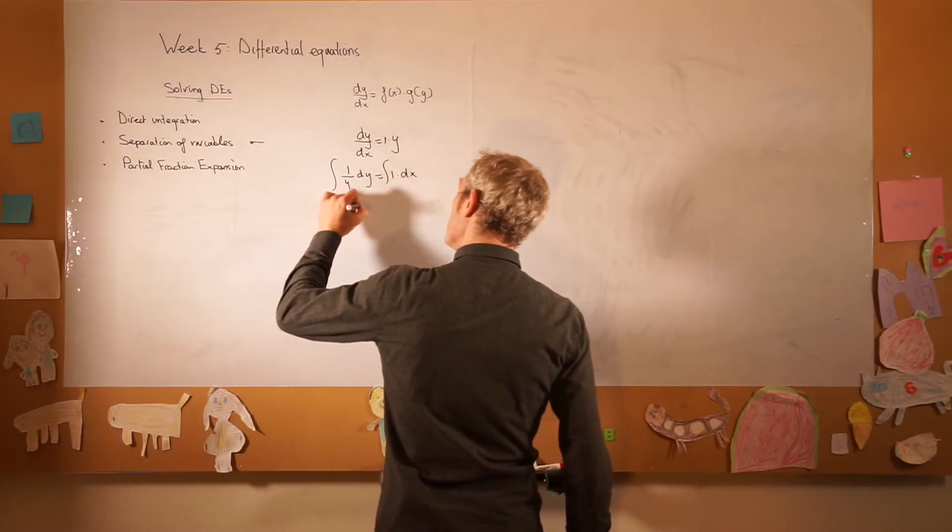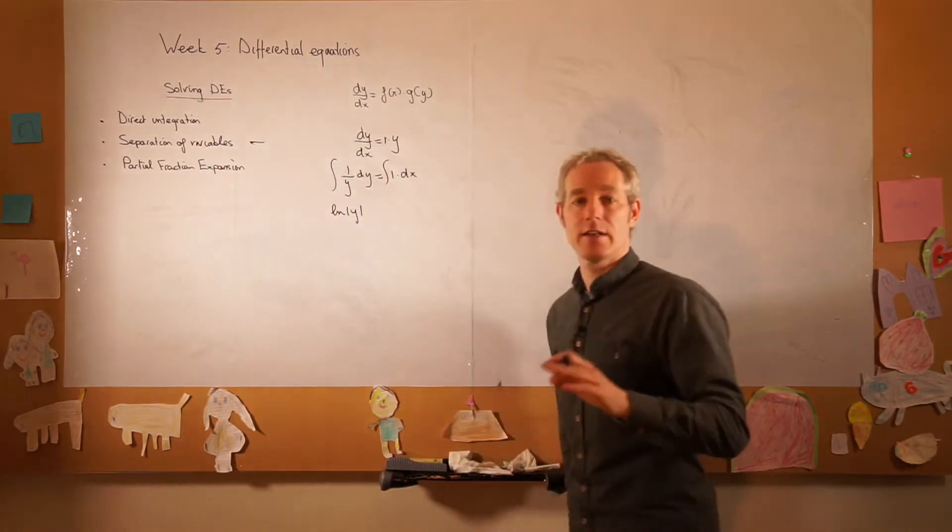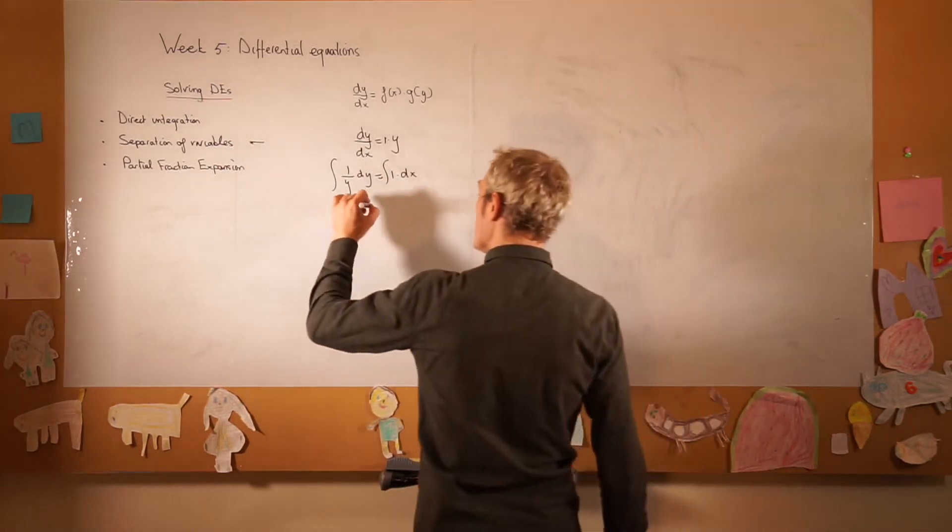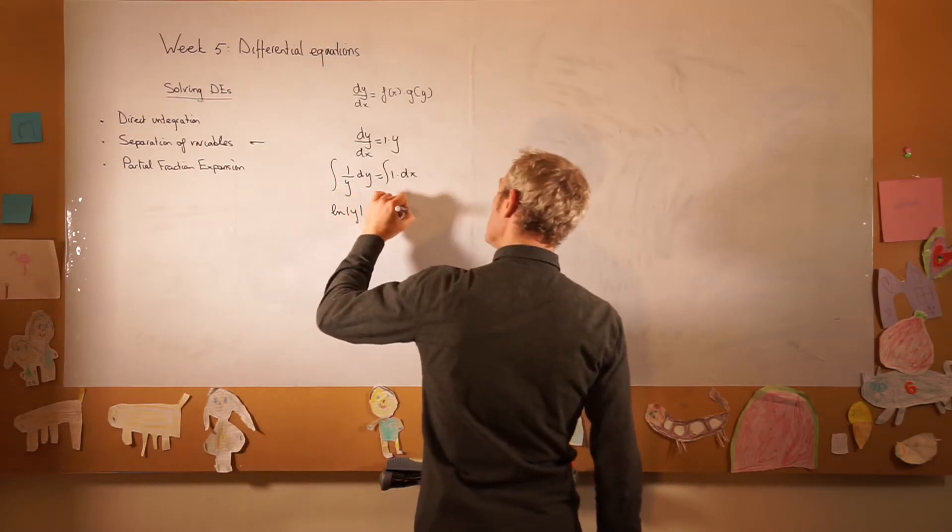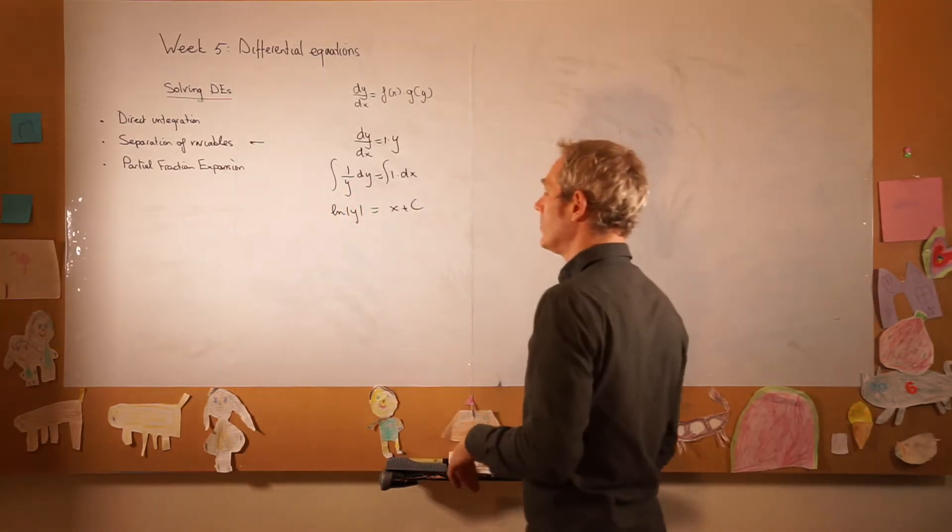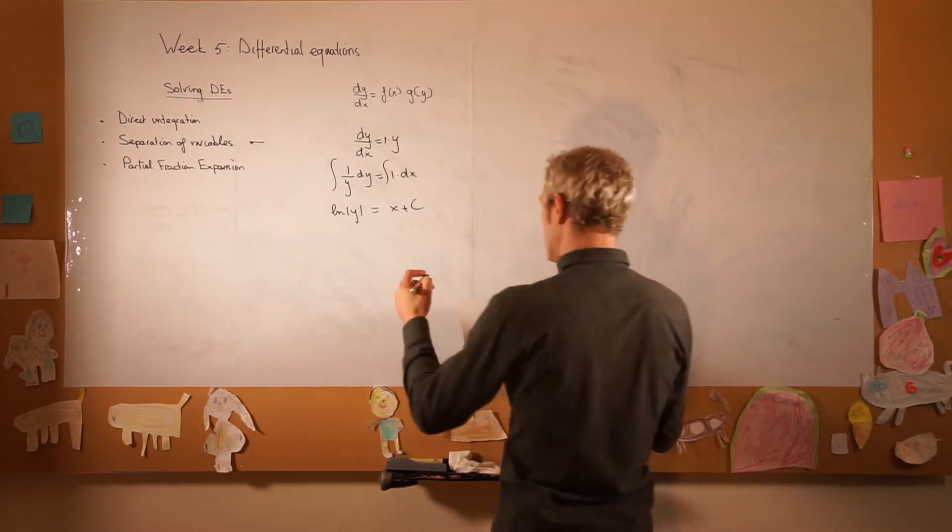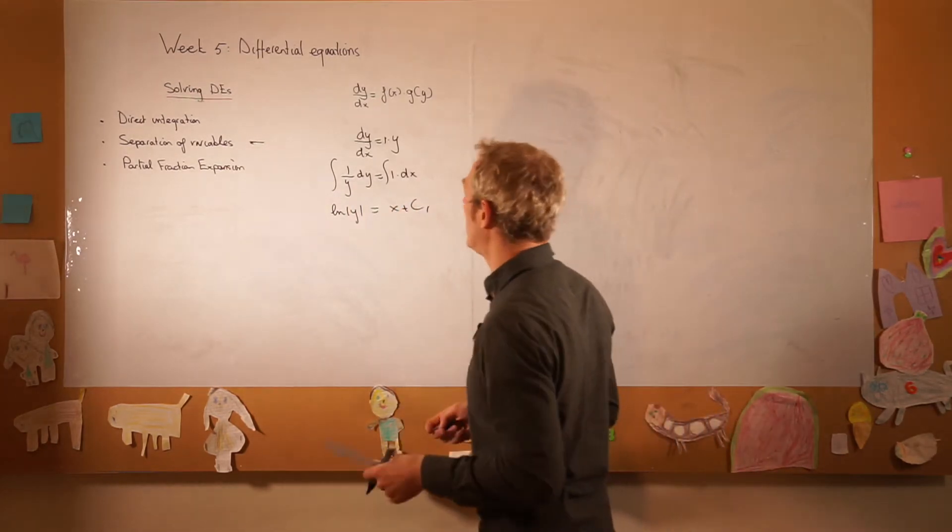So we get ln y, we've skipped the integration constant on the left-hand side, is equal to x plus c, and that's where it shows up. Let's call it c1, just for ease.